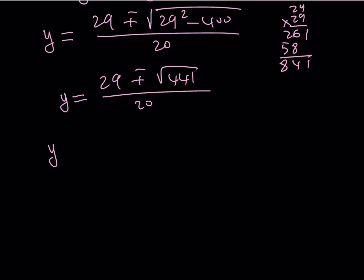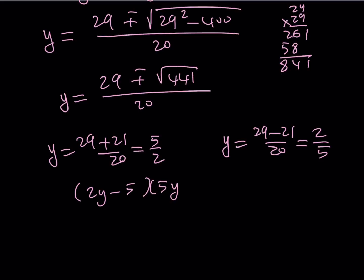So we're going to get 29 plus 21 over 20 and 29 minus 21 over 20. Those are going to be the solutions. This is going to be y equals... Actually, that's not right. The first one is not 2, obviously. It's going to give us 5 halves. And this is going to be 8 over 20, which can be written as 2 fifths. That verifies that the factors are 2y minus 5 and 5y minus 2. Great.